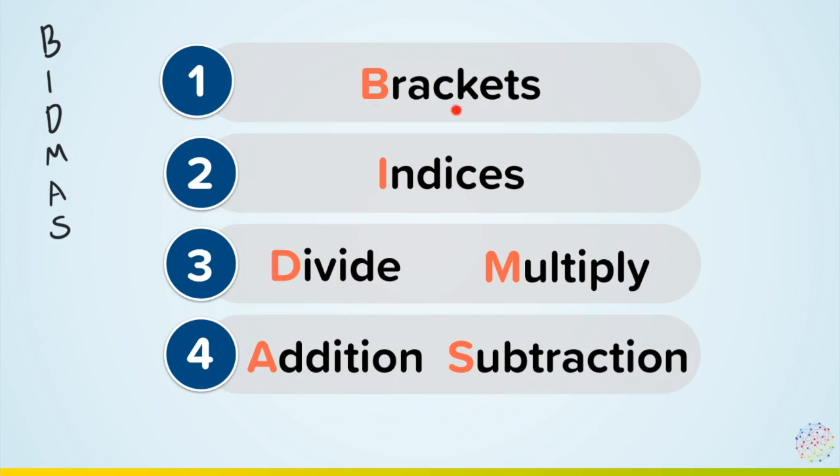So the first thing we do is the brackets. Anything with this around it. The next thing we do are your indices. And you might be thinking, what are indices? These are your powers. For example, these are the power of two, to the power of three, or your power of a half, which of course is the same as square root.